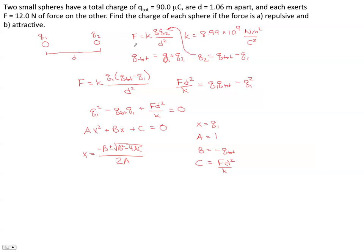Now, specifically what we're looking for: in case A, we're considering a force that's repulsive. If we remember from Coulomb's law, a repulsive force is one where F in Coulomb's law is positive. So to find the two q1s and q2s where the force is repulsive, we make sure we put positive 12 in here for F.